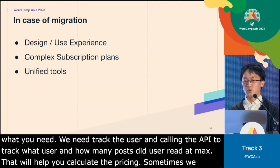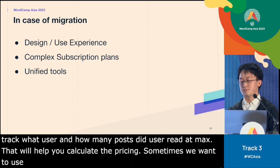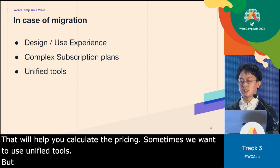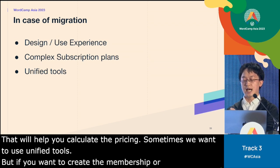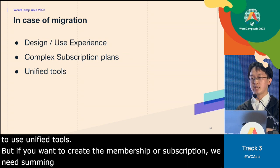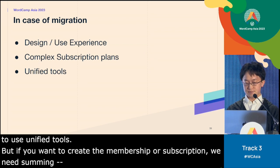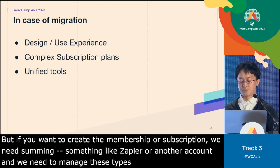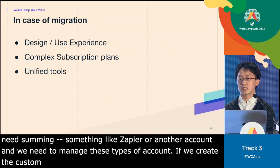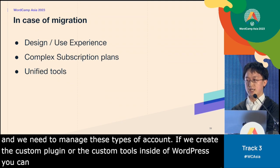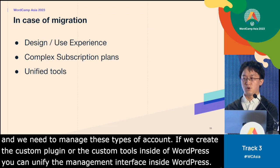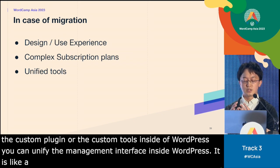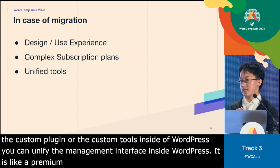For example, if you want to offer a premium blog where pricing depends on how much content a user reads, you need to track user activity and call an API to count how many posts a user read in a month and calculate the pricing — that's when it's time to migrate. Another issue is that using no-code tools can mean managing many SaaS accounts — Stripe, Zapier, Kintone, Line, WhatsApp, and many more. But if you create a custom plugin inside WordPress, you can unify the management interface, similar to WooCommerce or Paid Membership Pro.